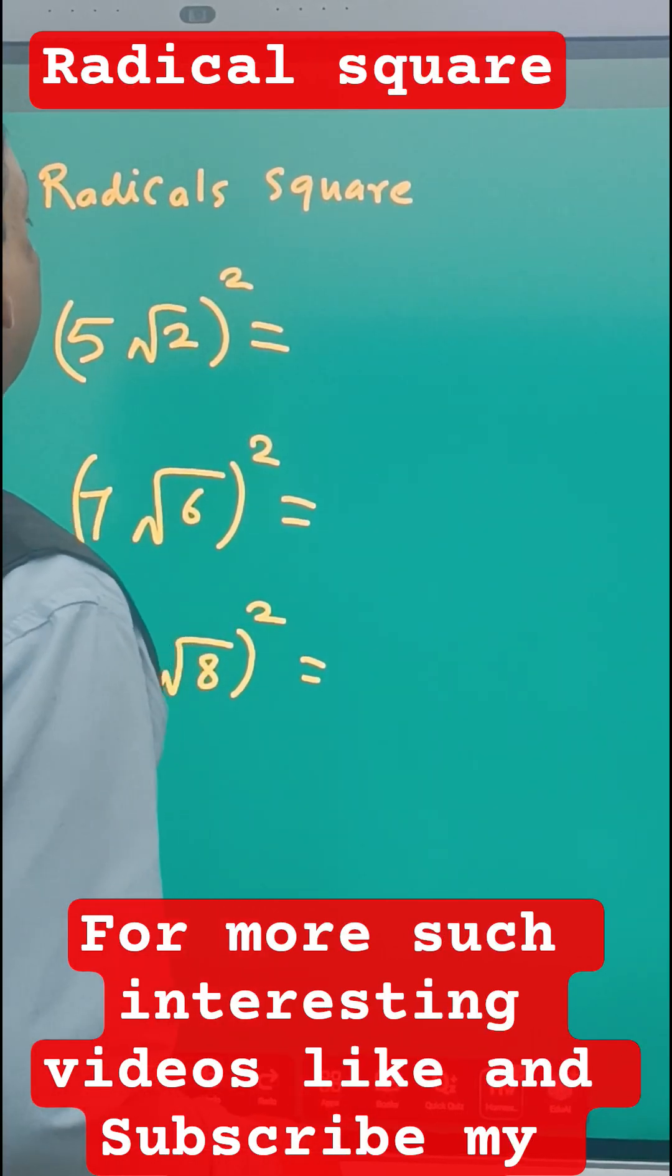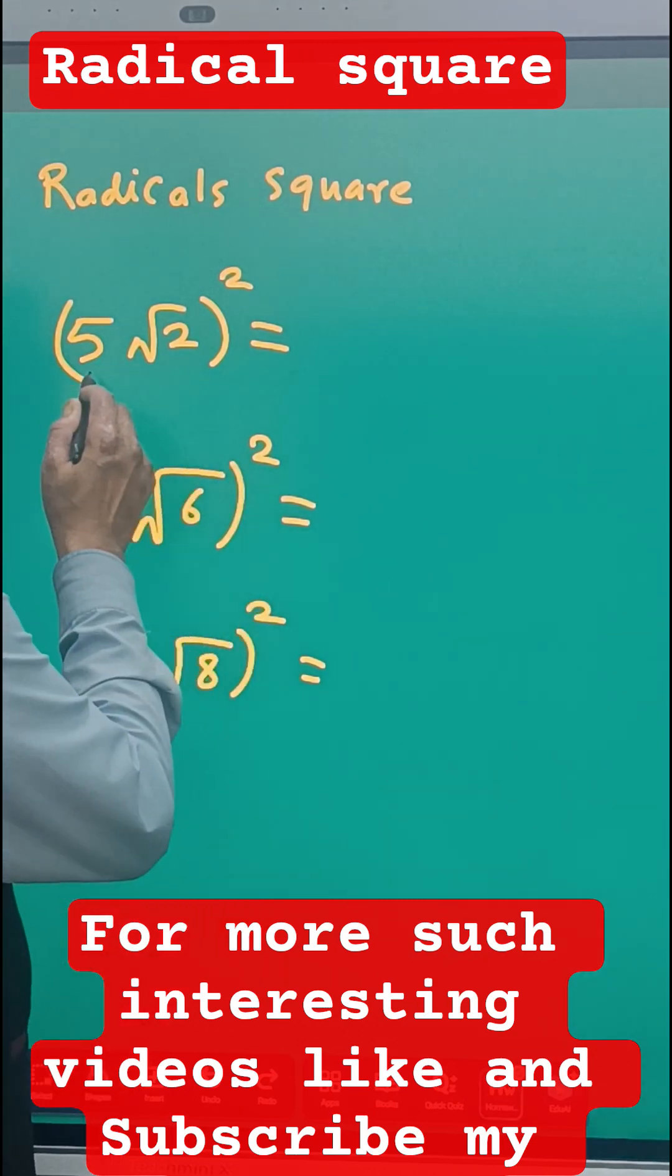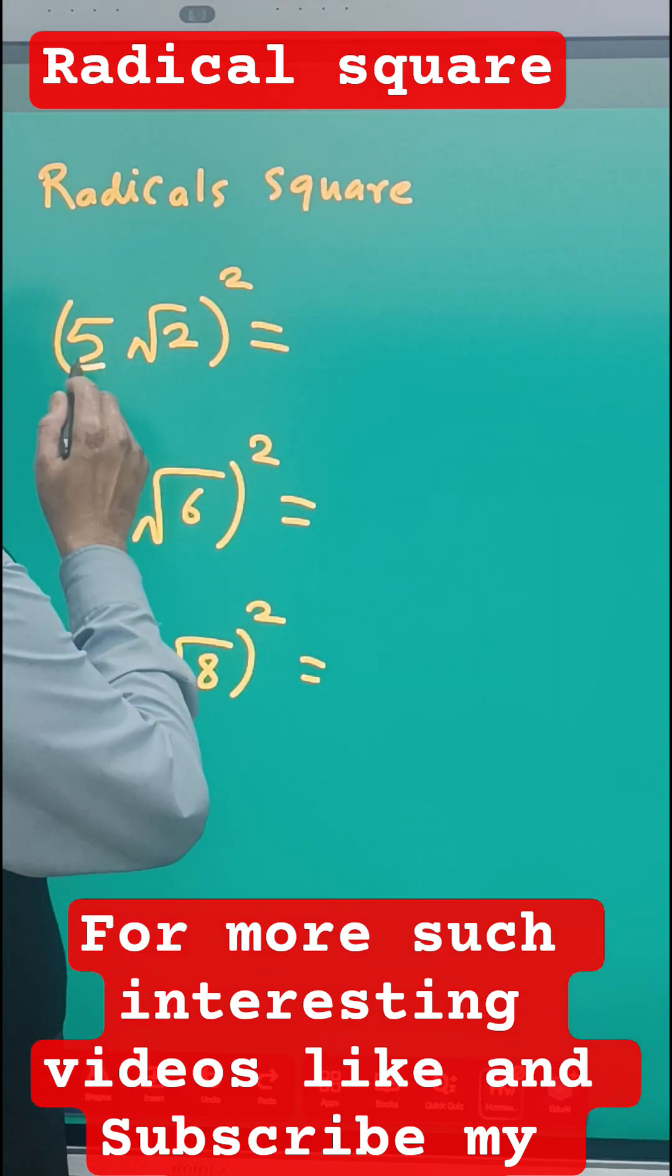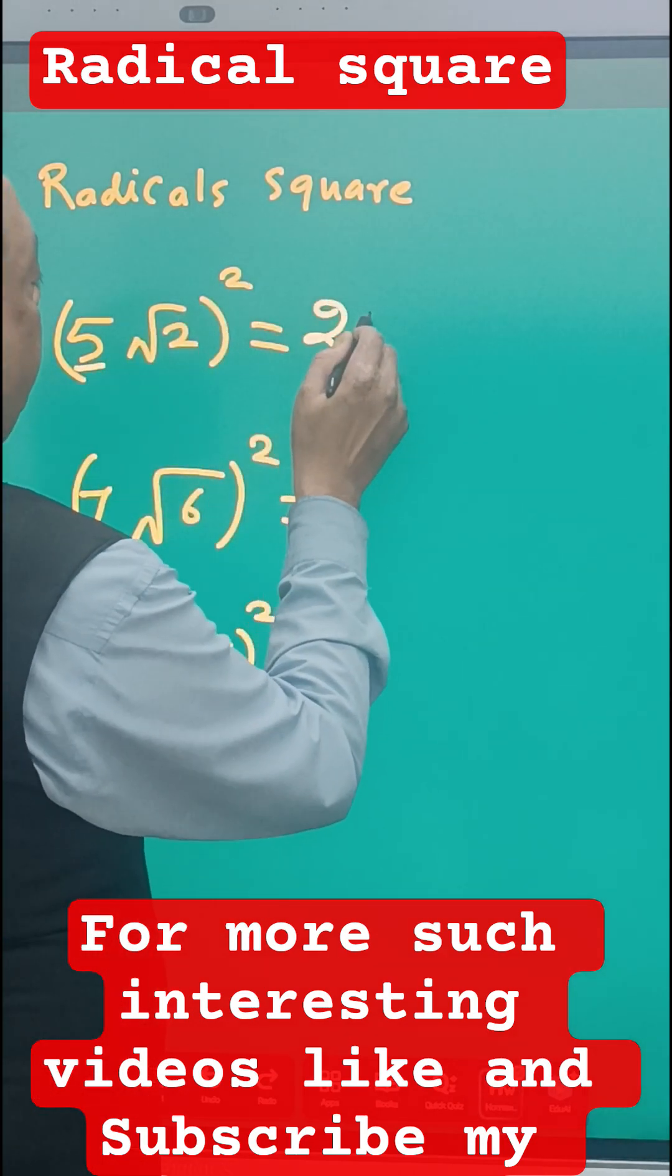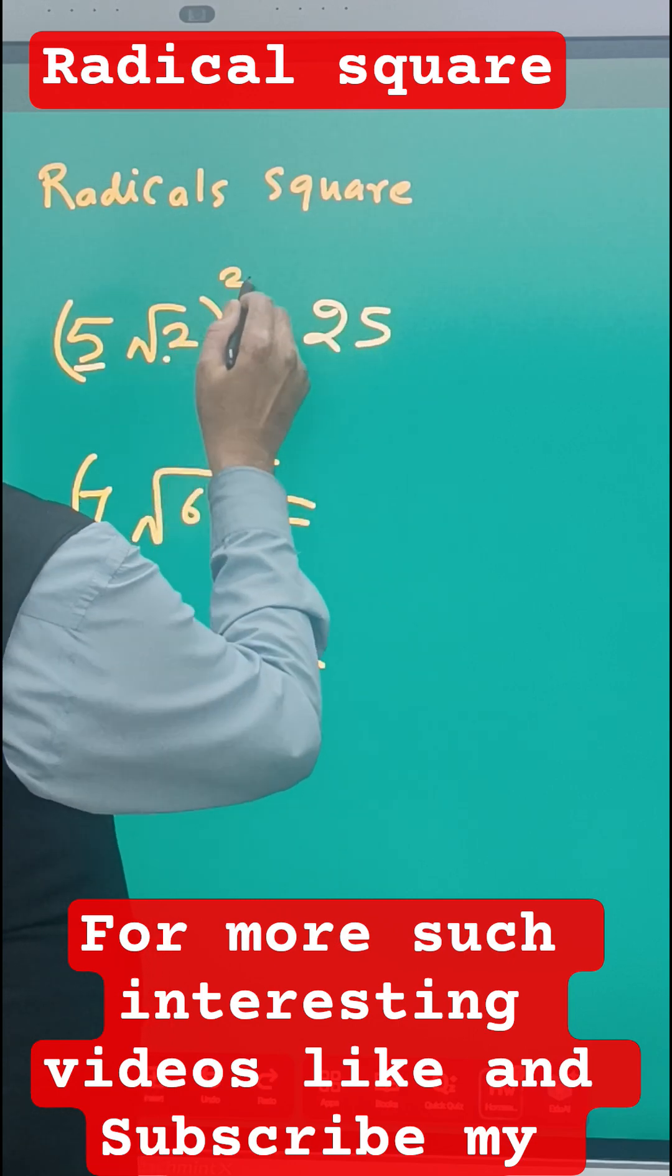Rules of a radical. Okay, radical is what? When there is a root number given, how to find the square. Square, we have to do the square of the first number, like 5 square 25, okay, and root 2 square into 2, that becomes 25 into 2, 50.